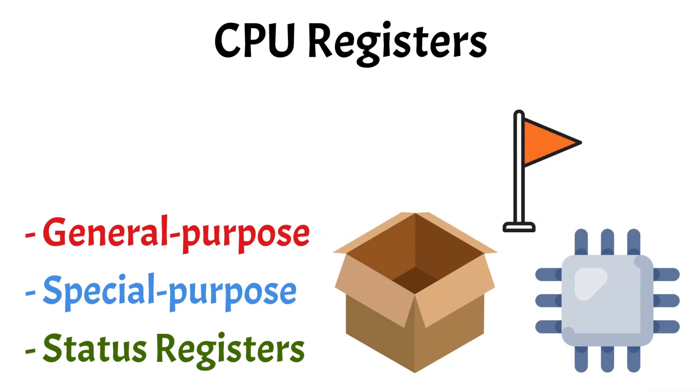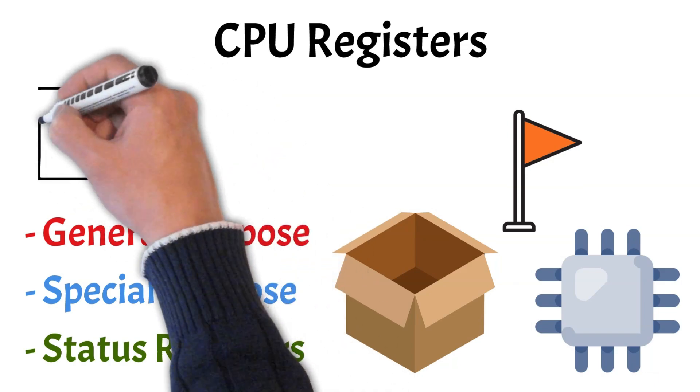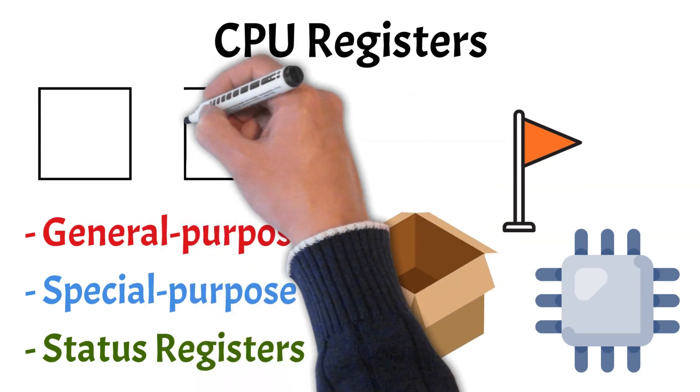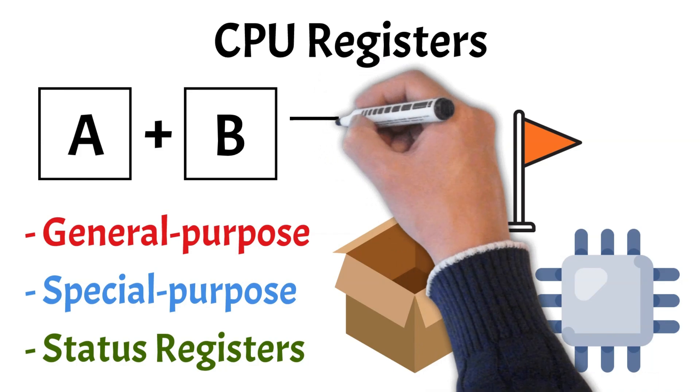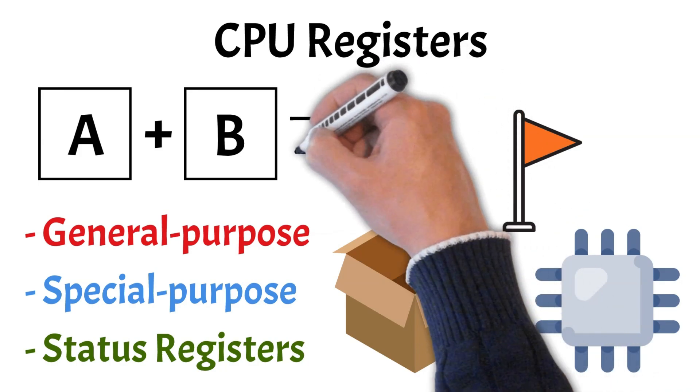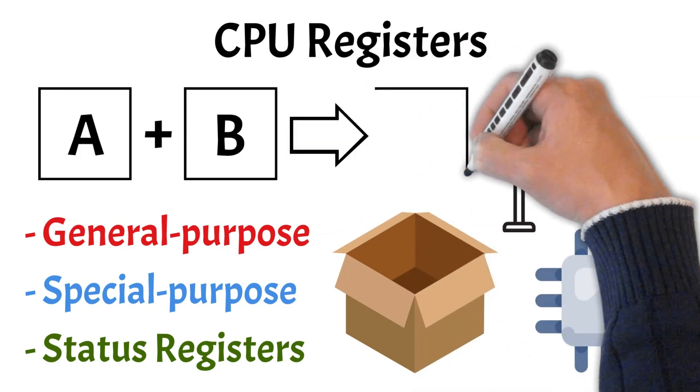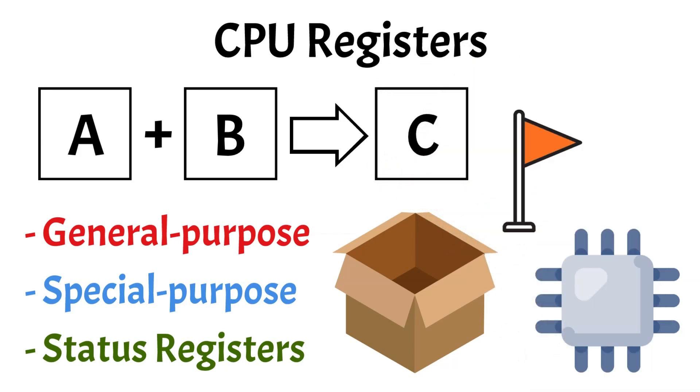For example, consider a simple operation where you want to add two numbers. The CPU might first load the first number into a general-purpose register, let's say register A, and the second number into another general-purpose register, register B. The addition operation is then performed using these registers, with the result stored in a third register, register C. This use of registers allows the CPU to perform calculations rapidly, significantly enhancing overall performance.